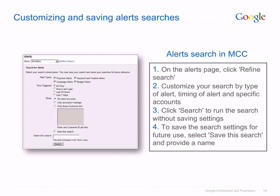Alerts can be extremely useful in keeping abreast of developments in accounts that may directly affect ad serving and hence traffic and potential revenue for a client. For example, you may choose to keep a close eye on your client's budgets to ensure they aren't depleting their budget during the day and missing out on valuable traffic. In this case, you could do a search for budget alerts since your last login for the accounts you manage. Save this search and then run it each morning to stay aware of any budget-constrained clients.